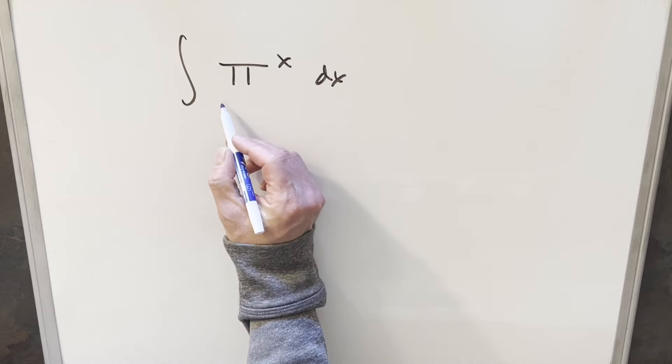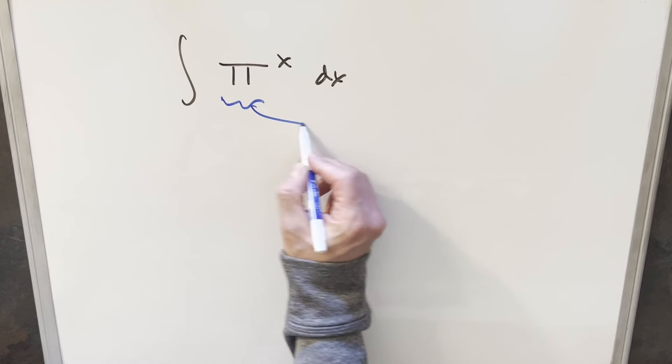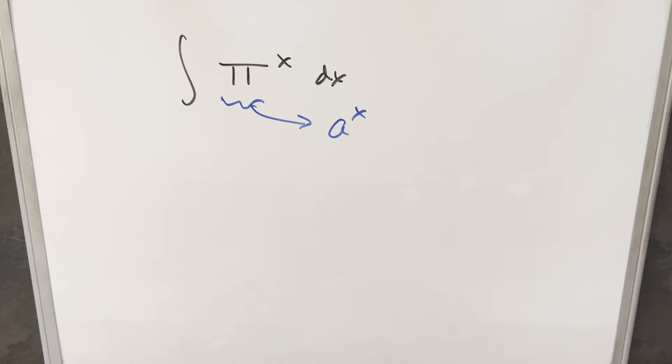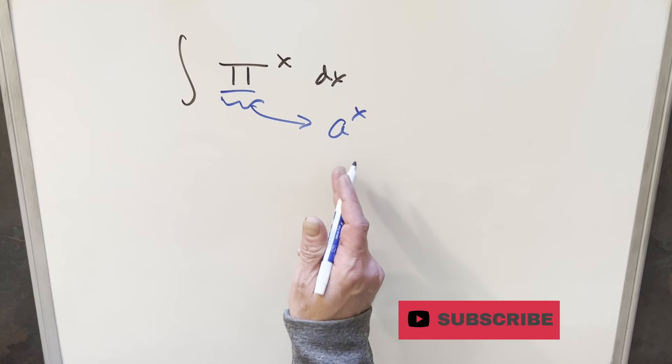Okay, it may look a little strange at first, but the thing is with pi, this is actually no different than we've had integrals in the past of like a to the x. Since pi is a constant value, it really doesn't matter what constant value we're integrating.